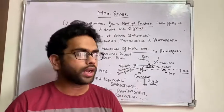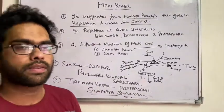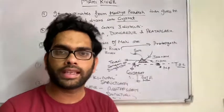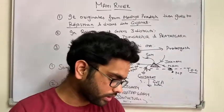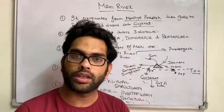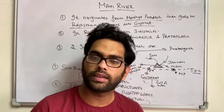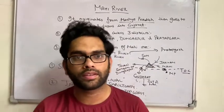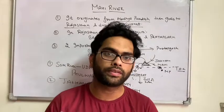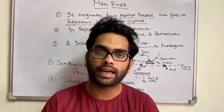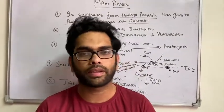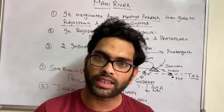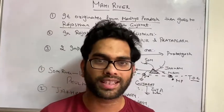The Mahi river originates from Madhya Pradesh, flows through Rajasthan and Gujarat, and its two important tributaries are the Jaakham river and the Som river. If you like the video, please subscribe and share with your friends — especially those preparing for RAS, 10th board, and RPSC exams. Thank you so much.